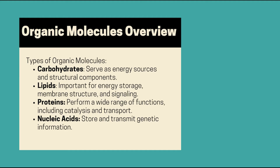Organic molecules are larger and more complex than inorganic ones. There are four major types we need to know: carbohydrates, lipids, proteins, and nucleic acids. Carbohydrates are the body's main energy source. Lipids store energy, build membranes, and act as hormones. Proteins do everything from building body structures to speeding up chemical reactions. Nucleic acids carry genetic information in DNA and help make proteins through RNA. All of these are carbon-based and made of smaller units called monomers, which link together to form larger molecules called polymers.